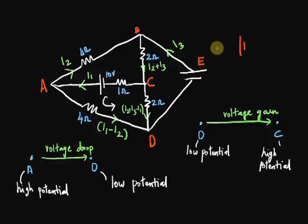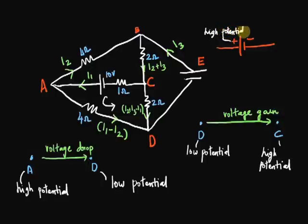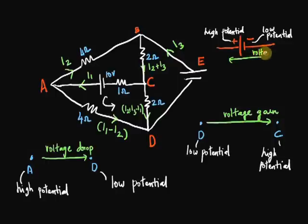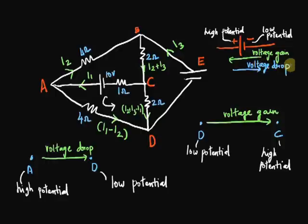The same concept is to be applied for voltage power supplies as well. The positive end will be at a higher potential than the negative end. When moving along a mesh from the negative terminal to the positive terminal of the power supply, there is a voltage gain. But if you move from the positive terminal to the negative terminal, there is a potential drop.